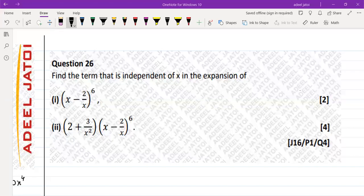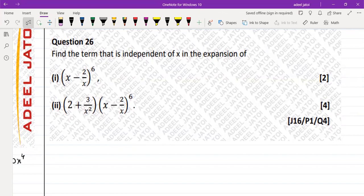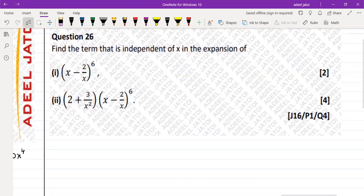June 2016, paper 1, question number 4, question 26 from the book. Find a term that is independent of x in the expansion of. Independent of x means x to the power 0. So to have x to the power 0, what I need to do is,